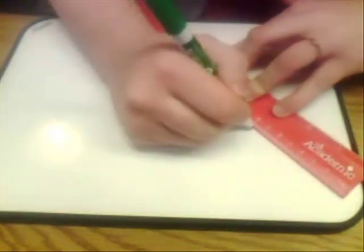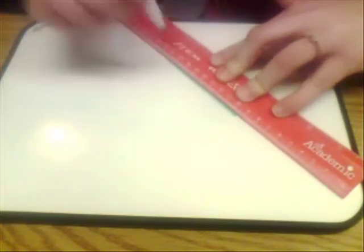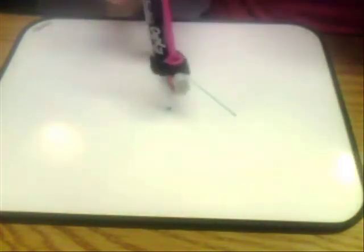We can construct the golden spiral using only a compass and straight edge. We begin with a line segment and then find its perpendicular bisector.